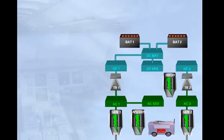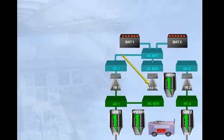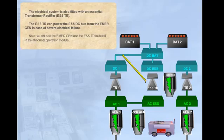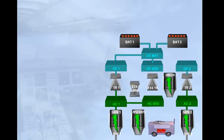The electrical system is also fitted with an essential transformer rectifier, essential TR. The essential TR can power the essential DC bus from the emergency generator in case of severe electrical failure. Note: we will see the emergency generator and the essential TR in detail in the abnormal operation module. Finally, a static inverter allows part of the AC electrical network to be supplied from BAT1.